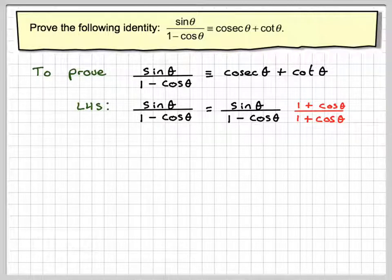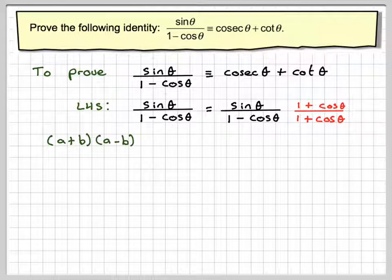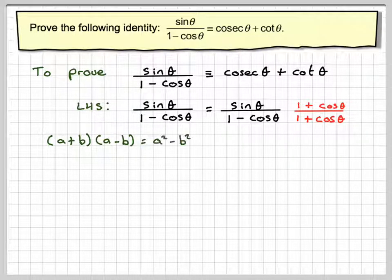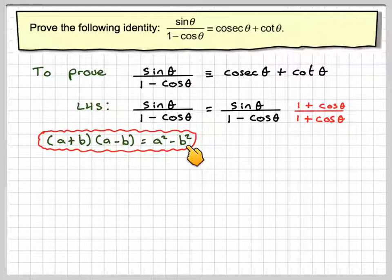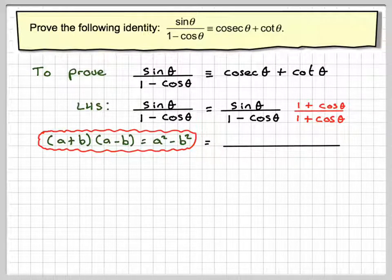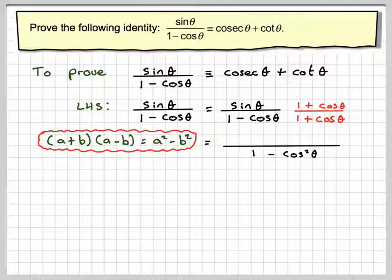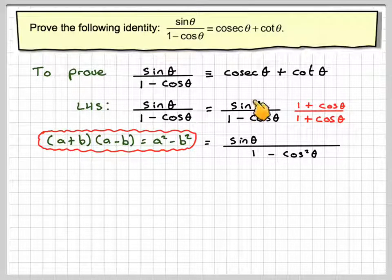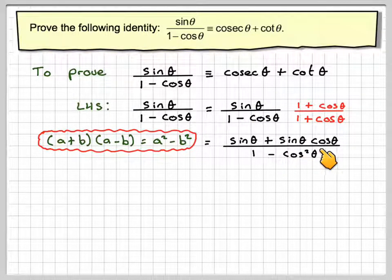Unless you've seen this technique before, you probably wouldn't realise to do it. The denominator is now of the form (a + b)(a − b), which we know equals a squared minus b squared. So this is going to be 1 squared minus cos squared theta. For the numerator, we do sine theta times 1, which is sine theta, plus sine theta times cos theta.